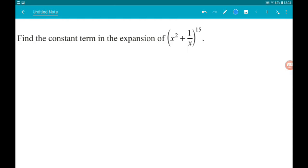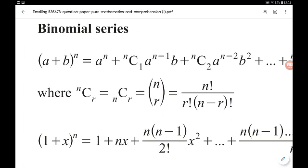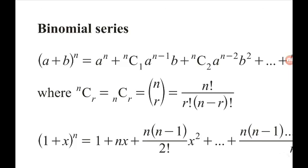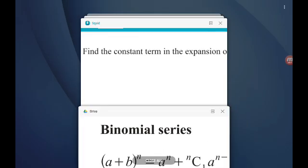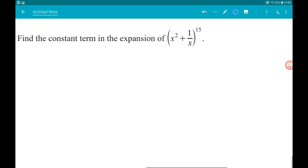Question 6. We want to find the constant term in the expansion of x squared plus 1 over x to the power of 15, 2 marks. We are given a binomial expansion in the formula part. So constant term means a term with no x's, so just purely a number.